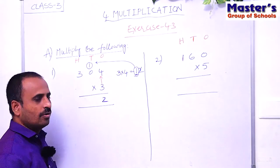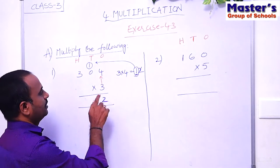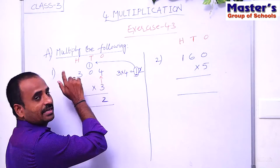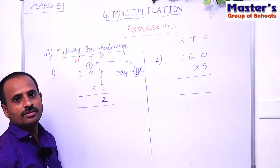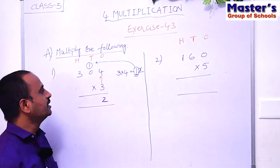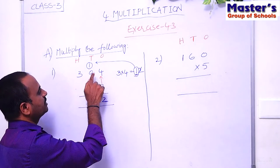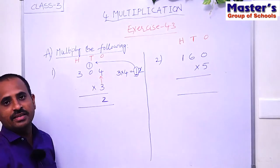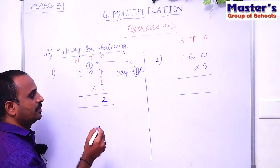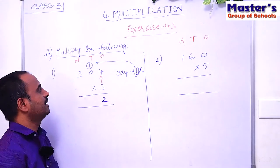Now multiply the digit in the tens place with 3. The digit in the tens place is 0, so multiply 0 with 3.